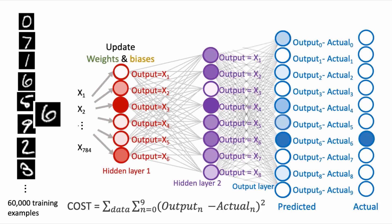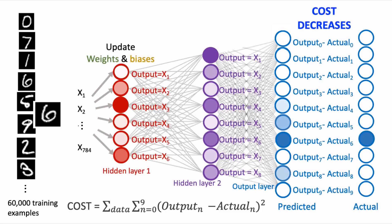Such that the output, which becomes the input to the second hidden layer, will cause the second hidden layer neurons to produce outputs that get fed as inputs to the output layer neurons, which then will produce ultimate outputs from our network that are closer to the answers that we want for all the data in our training set. And this is one learning step of backpropagation.